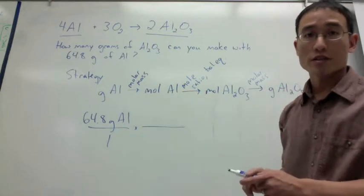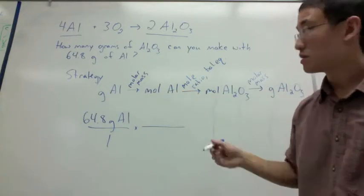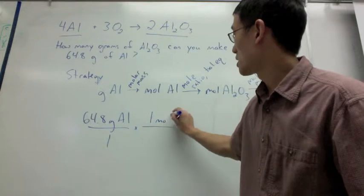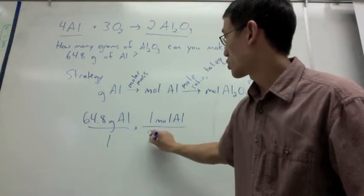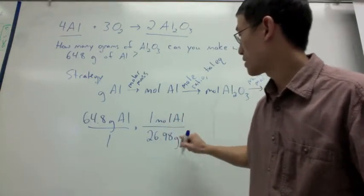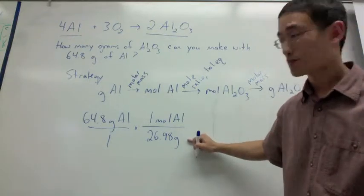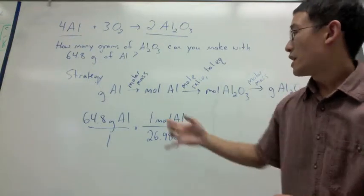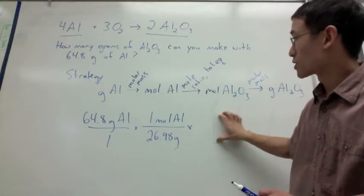First up is molar mass. And so from the periodic table, you know that one mole of aluminum is 26.98 grams, and that just comes straight from the periodic table.